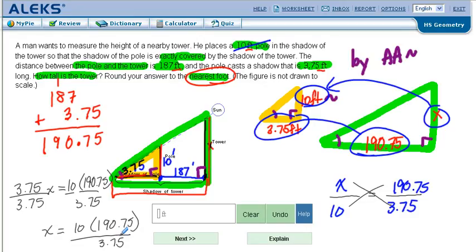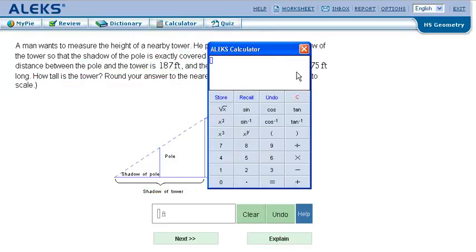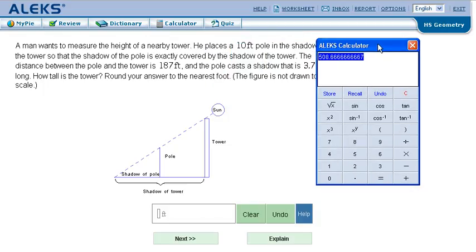At this point you bring out your calculator. We're going to go 10 times 190.75 divided by 3.75, and we get 508.66.